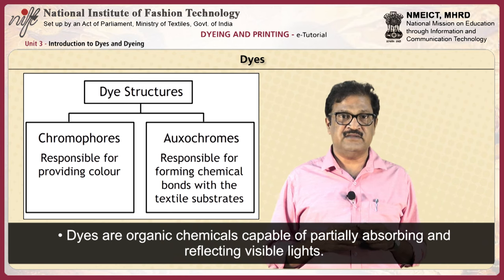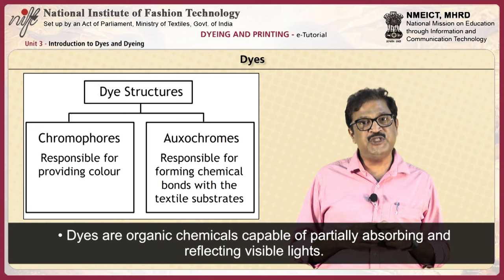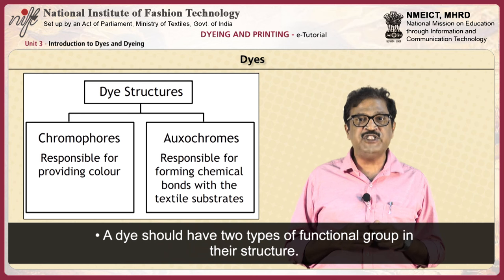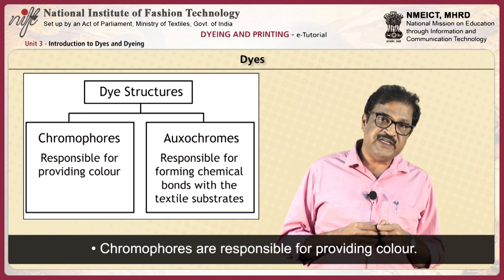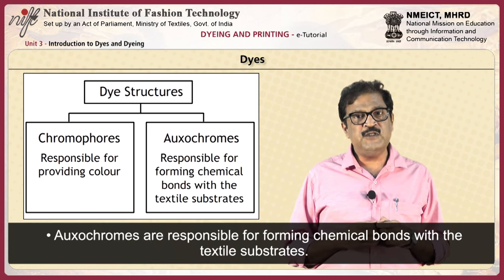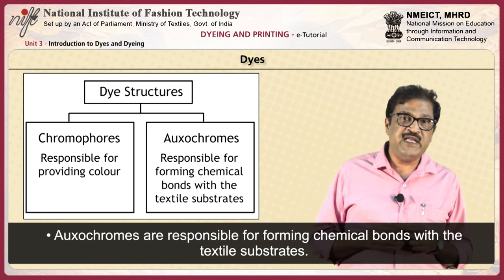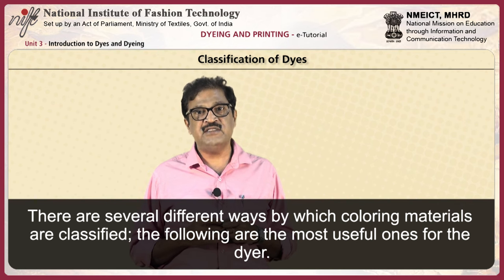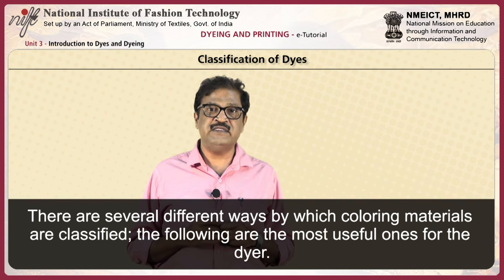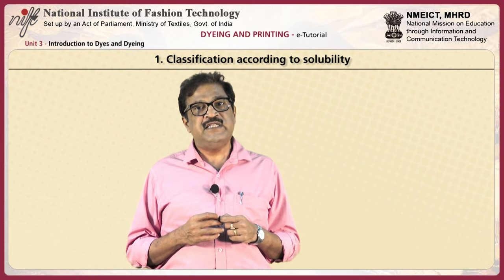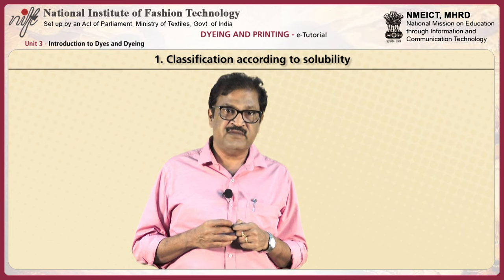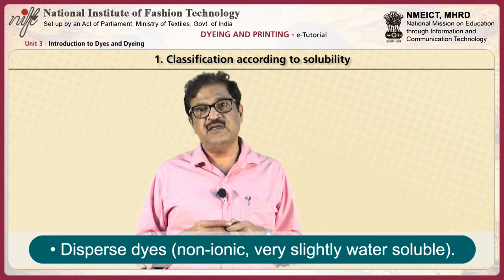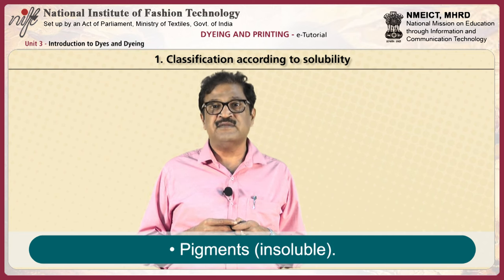Classification of dyes: dyes are organic chemicals capable of partially absorbing and reflecting visible light. A dye should have two types of functional groups in their structure. Chromophores are responsible for providing color. Auxochromes are responsible for forming chemical bonds with the textile substrates. Dyes can be classified according to solubility: soluble dyes (anionic or cationic), dispersed dyes (non-ionic, very slightly water-soluble), and pigments (insoluble).